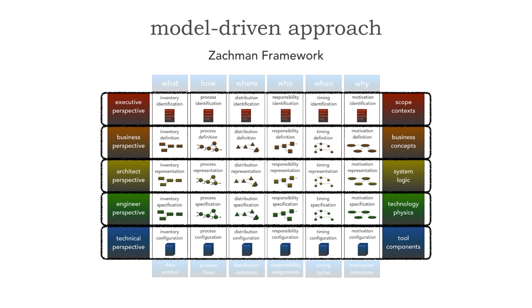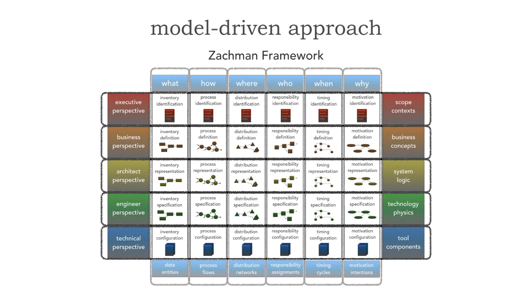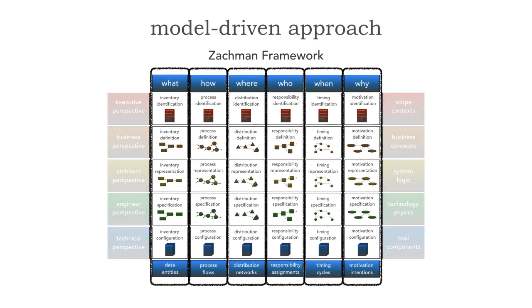These perspectives are really useful because from an engineering perspective, being a developer, I need to know very specific details. Whereas from the architecture view, I really don't need to know that many details — I need to know how things fit together. I really like the way this is organized from a documenting or modeling standpoint. And then, of course, across perspectives we have models organized around the six core questions of human nature: what, how, where, who, when, and why.